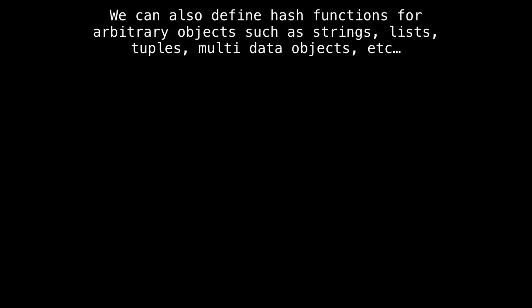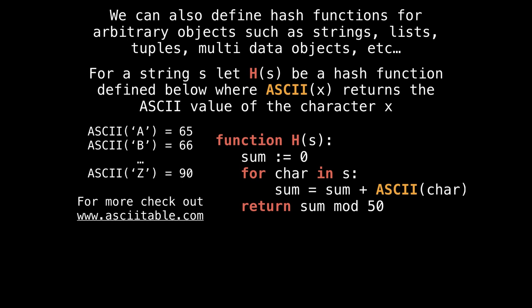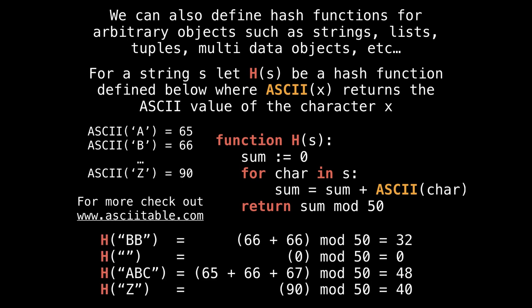So we can also define arbitrary hash functions, not just on integers, but on arbitrary objects, which makes this really powerful. For instance, suppose we have a string s, and we're going to say h of s be the hash function that I have defined below. So this hash function, all it does is it sums the ASCII values of the characters within the string, and then at the end says modulo 50. So that will, for any given string, just output a number, and that's a hash function. For example, some simple inputs, so h of bb gets 66 plus 66, and then we mod that by 50, so we get 32. The empty string gets 0, because we don't even execute the loop, and so on. So we've effectively converted a string to a number. Great.